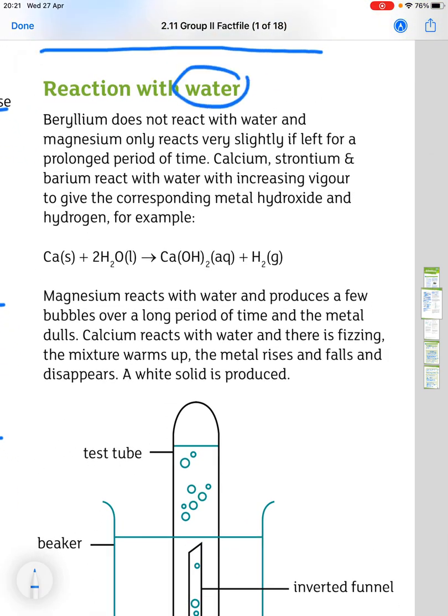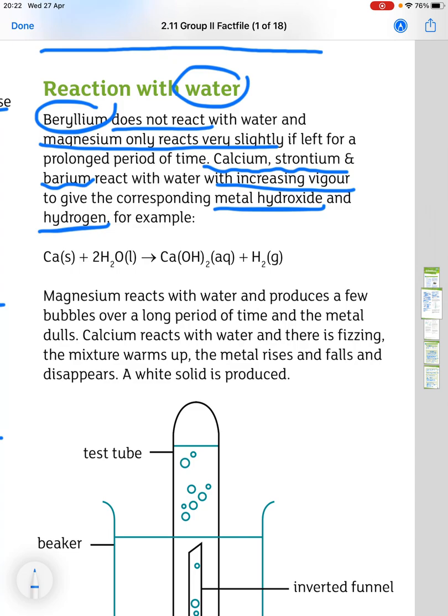Now, the metals reaction with water. Beryllium does not react with water. Magnesium only reacts very slightly if left for a prolonged period of time. Calcium, strontium, and barium react with increasing vigour to give the corresponding metal hydroxide and hydrogen.